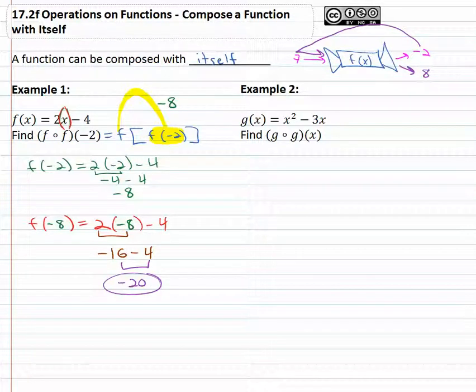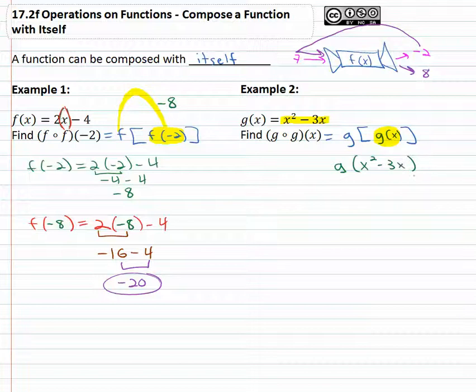We can do it even with a variable. When we're asked to find g of g of x, what that's saying is g of g of x, which means in the center we're going to first find g of x, which is x squared minus three x. So we've got g of the x squared minus three x because that's what g is. And then since we have this expression inside the function, the expression, whatever's in parentheses, replaces the variable in g.